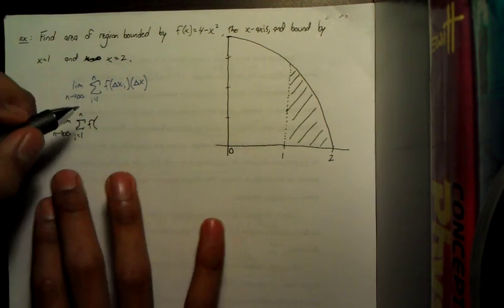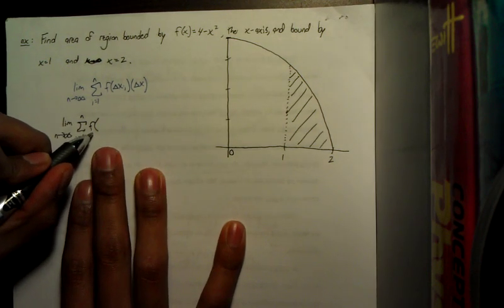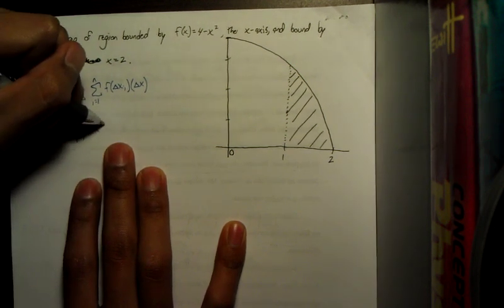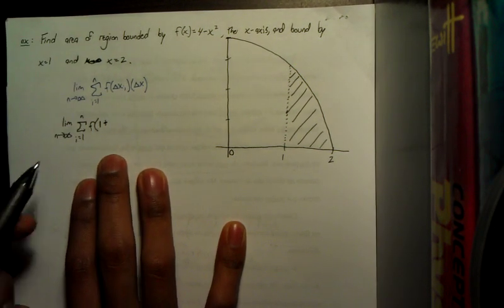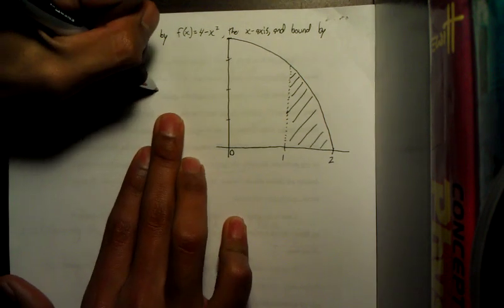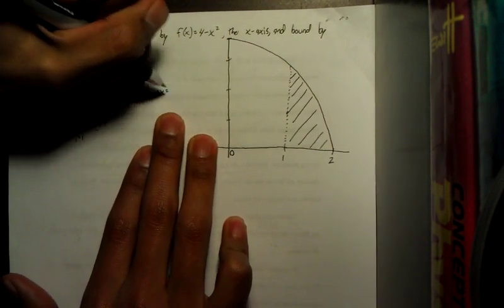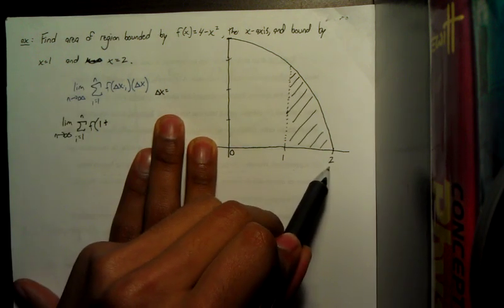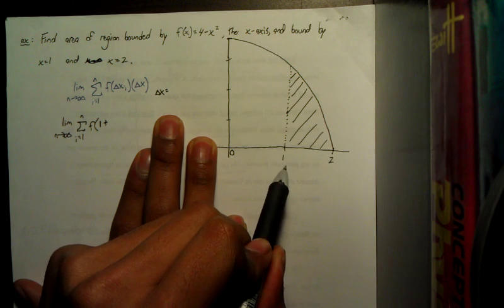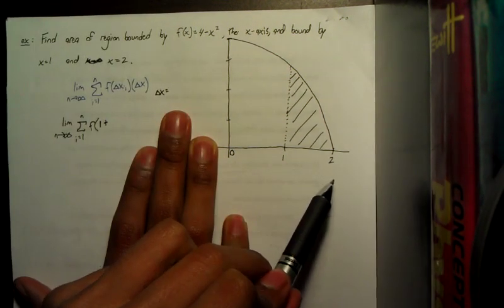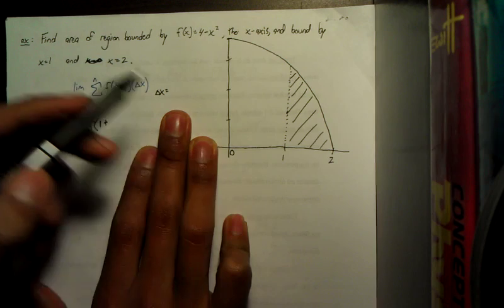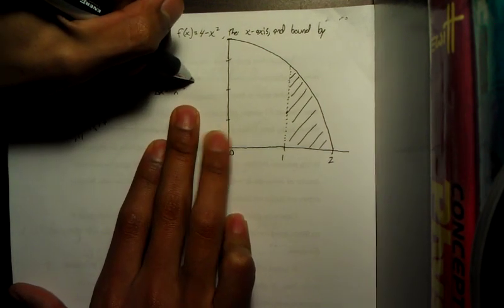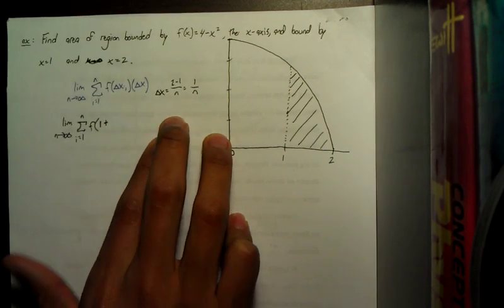So that means that what we'll be plugging back into the original function is going to be 1 plus, and then it would help to find our change of x. In this case, 2 is our b and 1 is our a. b is always the rightmost and a is always the leftmost. So b minus a over n, and our change of x equals 1 over n.